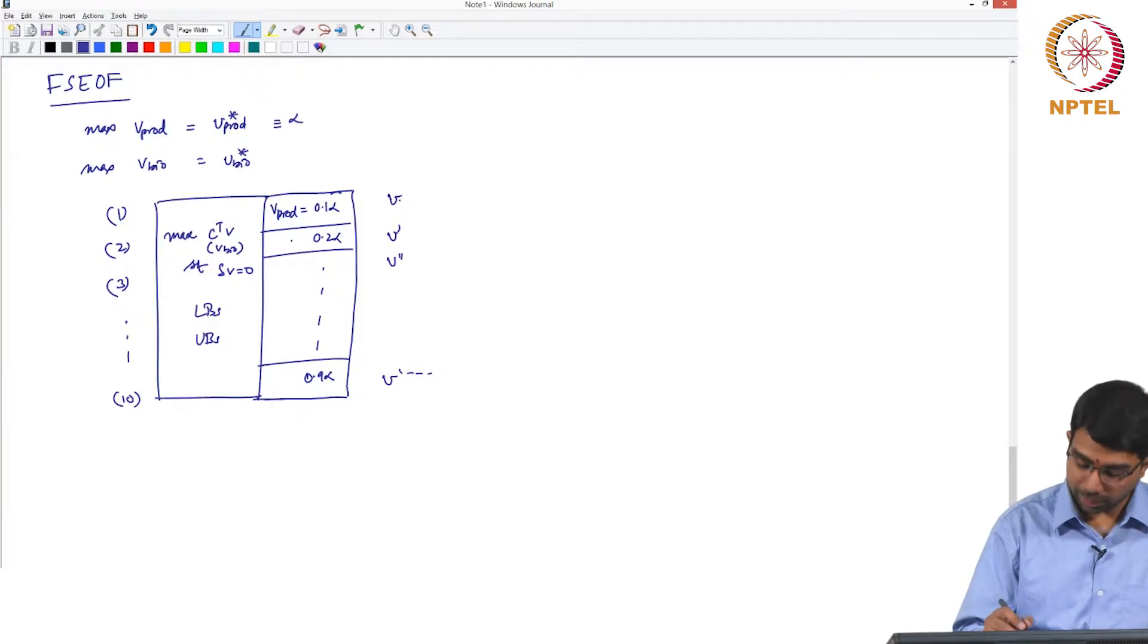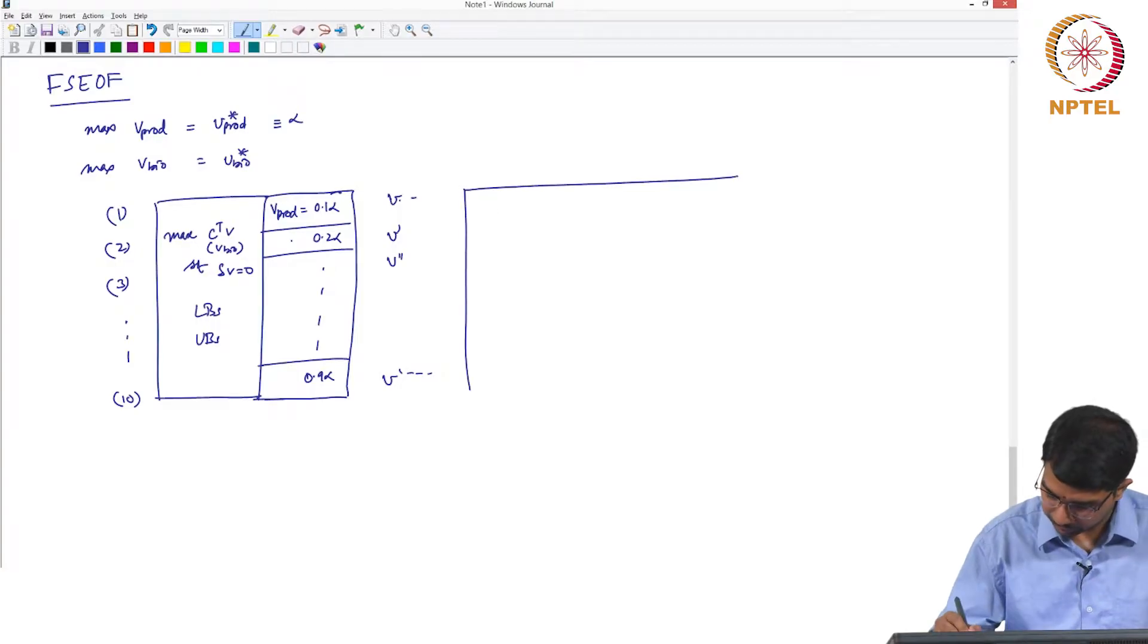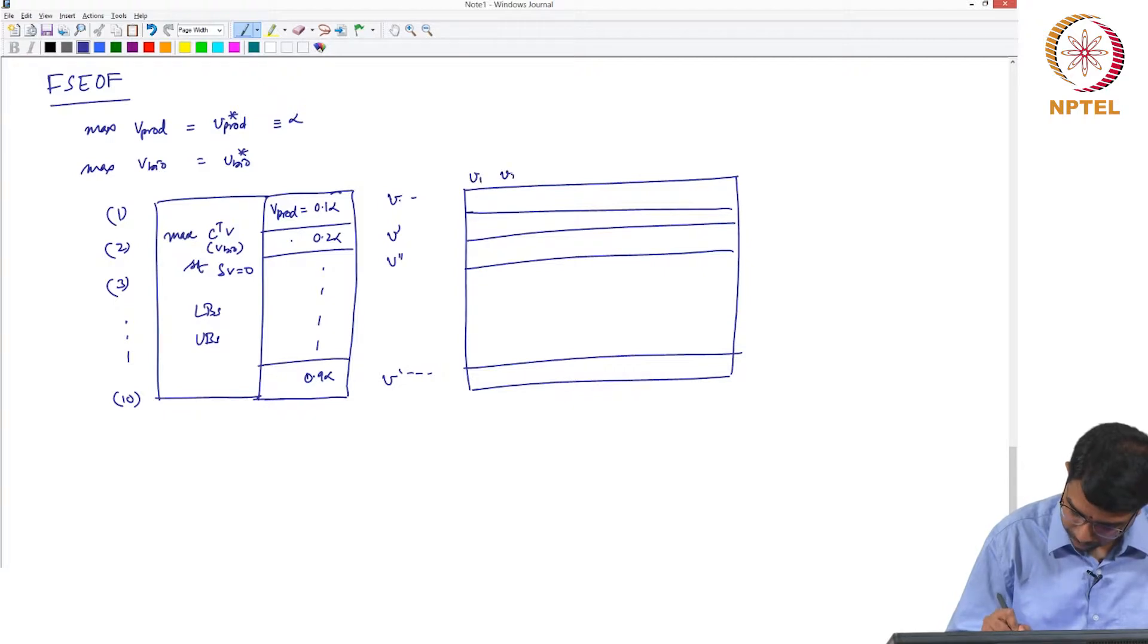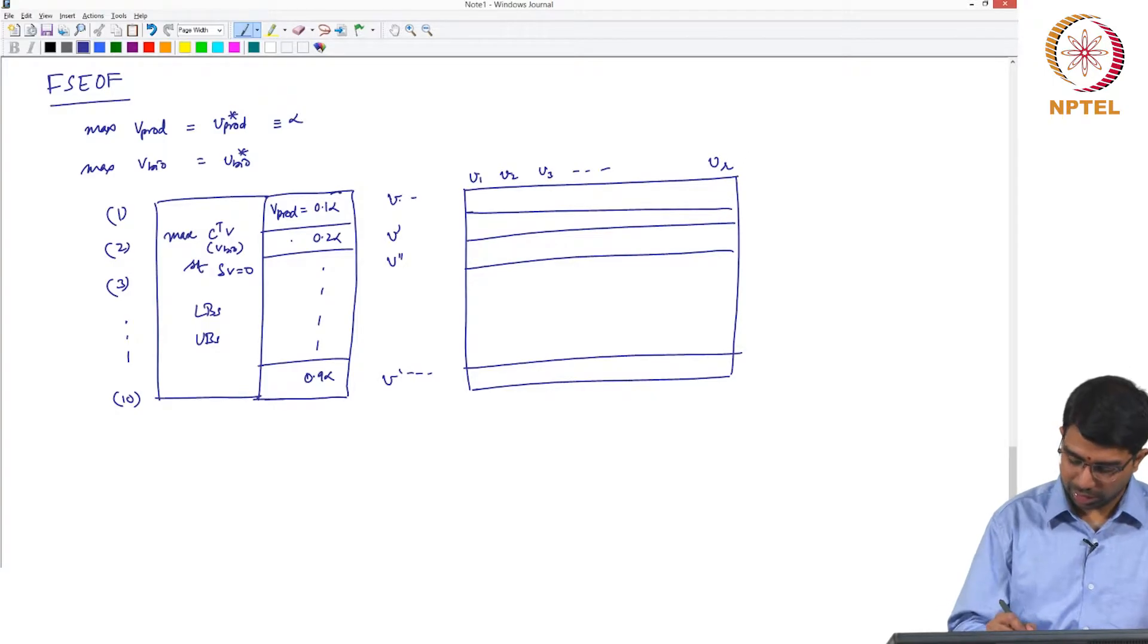So how do they look? These are basically going to be vectors with values for V1, V2, V3, Vr. You are going to have 10 or 9 values for these.